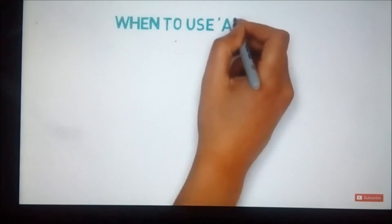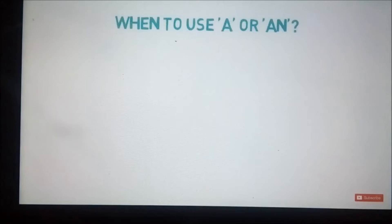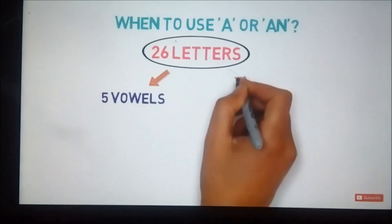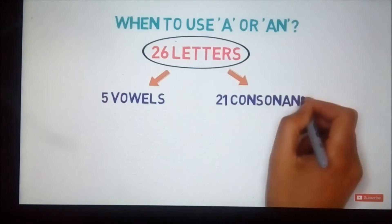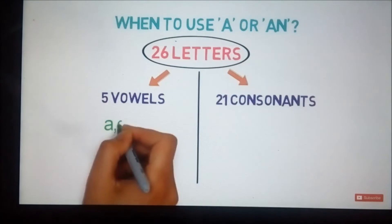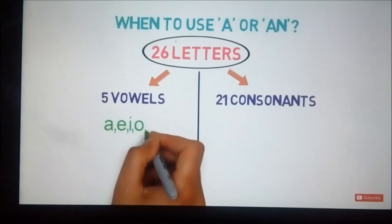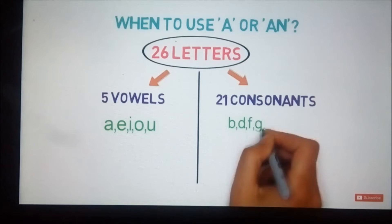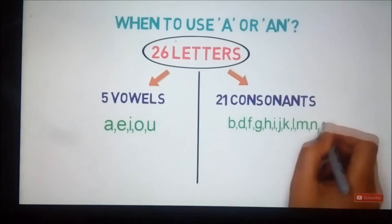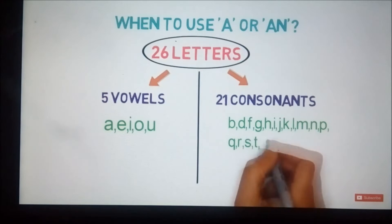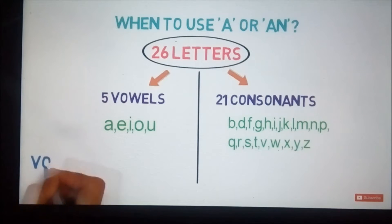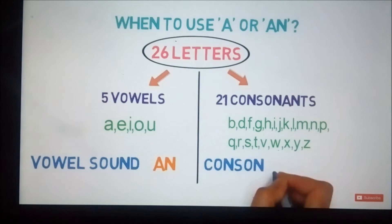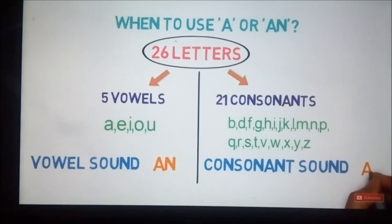So, how to decide when to use 'a' or 'an'? Basically, there are 26 letters in English, out of which 5 are vowels and 21 are consonants. The 5 vowels are a, e, i, o, u. The rest 21 consonants are b, c, d, f, g, h, j, k, l, m, n, p, q, r, s, t, v, w, x, y, z. If a word is beginning with a vowel sound, 'an' is used. And if a word is beginning with a consonant sound, 'a' is used. Please note, we have to check the vowel sounds and consonant sounds.